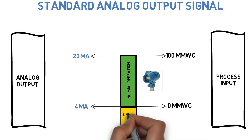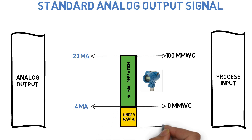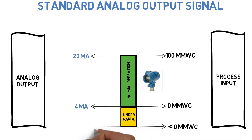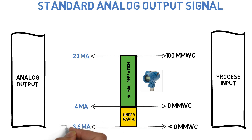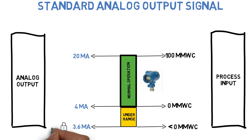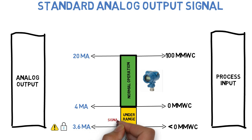If the process input falls below the lower range value of the transmitter, the analog output also reduces between 4 and 3.6 mA. If the process input exceeds the lower range value, the analog output holds at 3.6 mA. Holding at these values warns the control unit of an out-of-range event. This out-of-range signal is referred to as Signal Saturation.